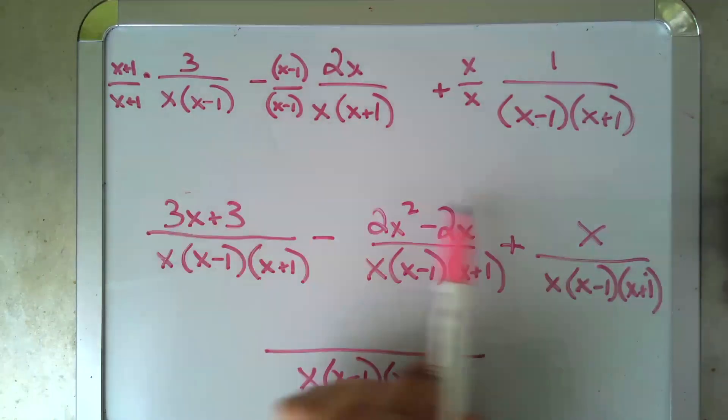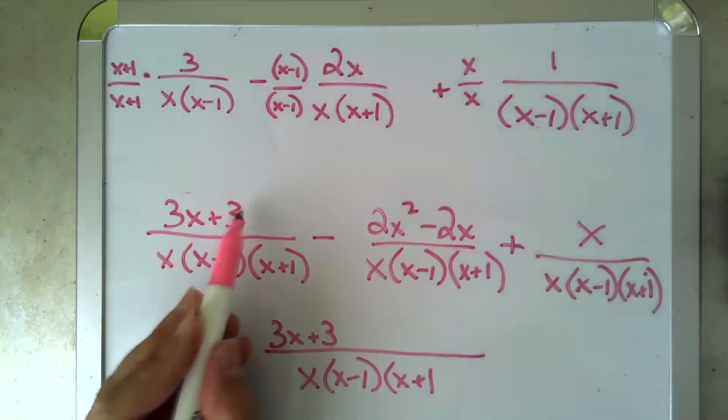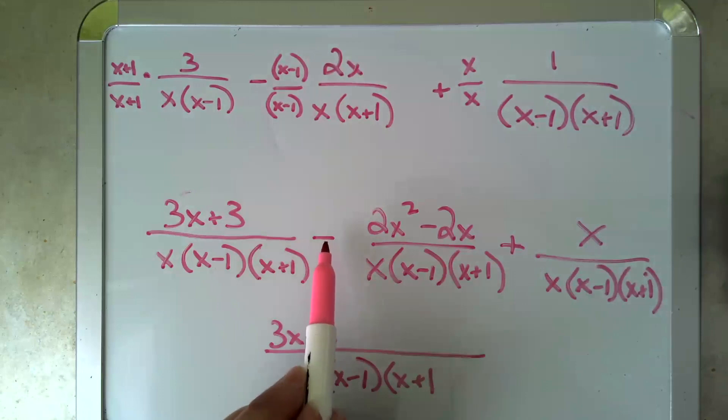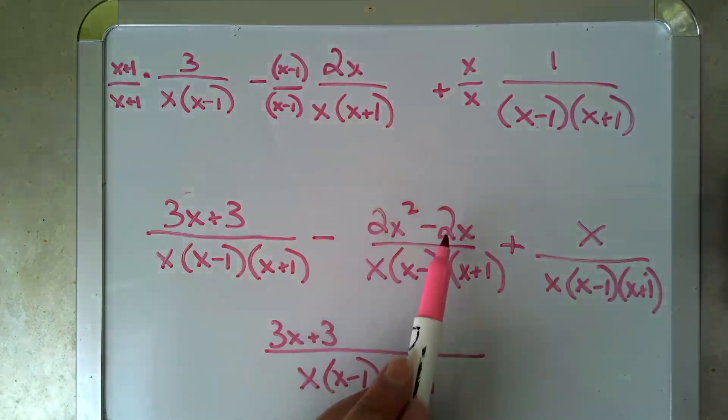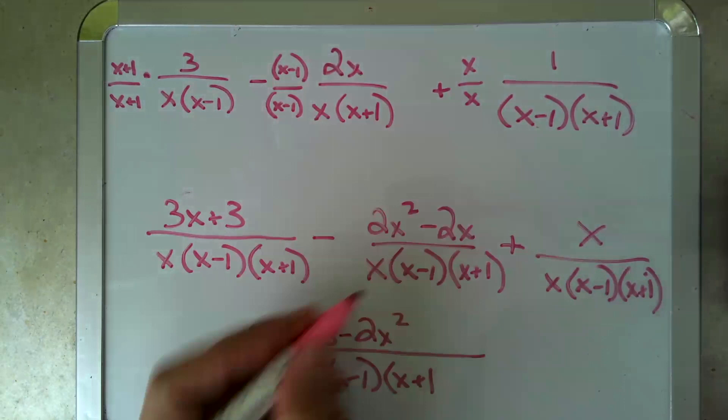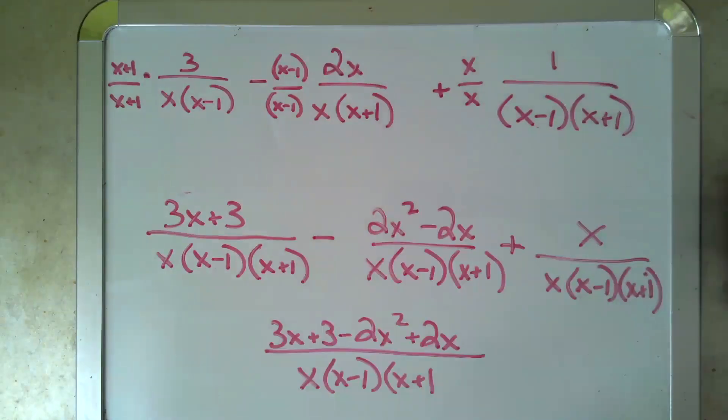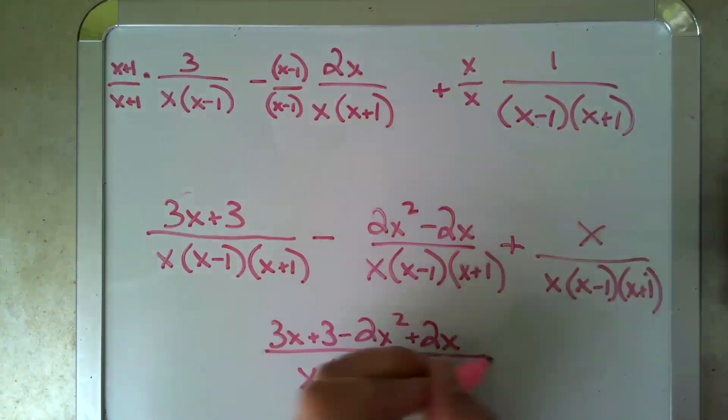So when I put all this together, I get 3x plus 3. Now this minus applies to both of these terms, so that's minus 2x squared, but now minus minus 2x means plus 2x. Keep an eye on that. And finally, plus x.